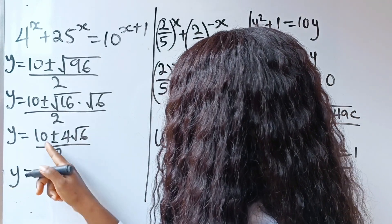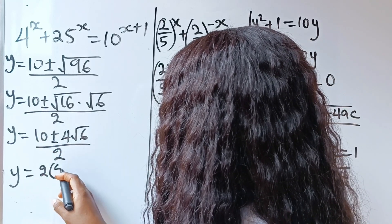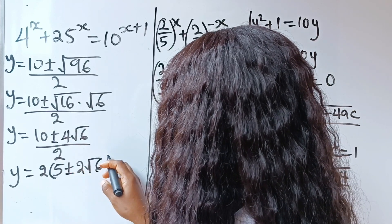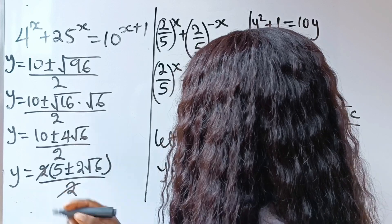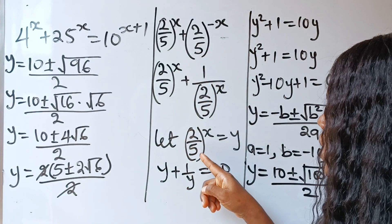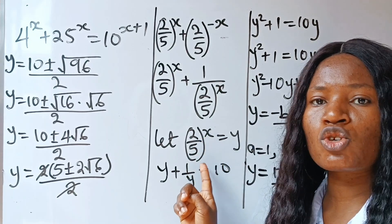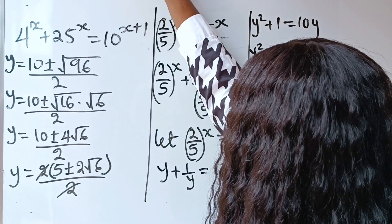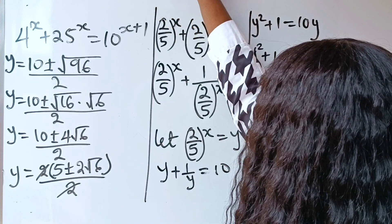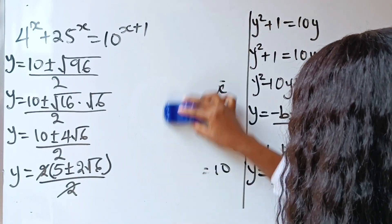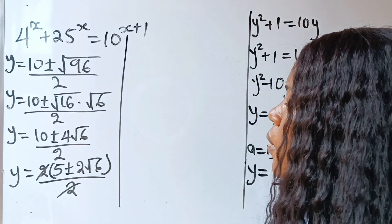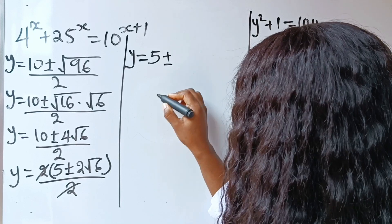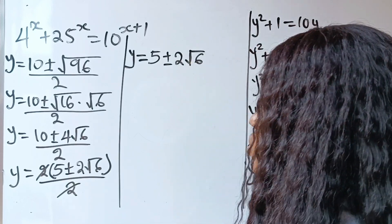So our y is equal to — let's factorize 2 out — 10 divided by 2 gives us 5, plus or minus 4 divided by 2 gives us 2 root 6. So we can write that our y is equal to 5 plus or minus 2 root 6.